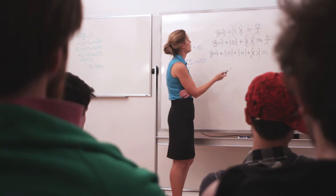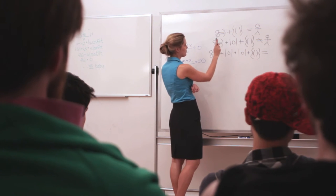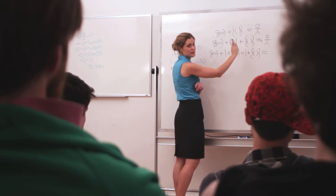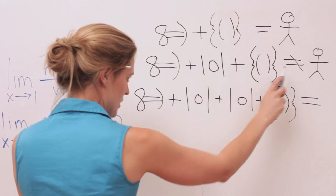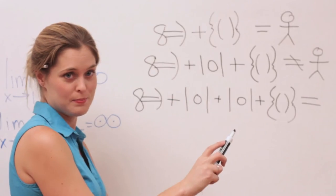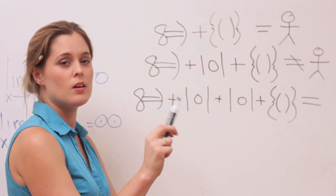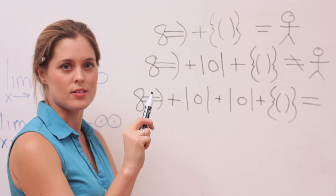Now class, we all know that guy part plus lady part equals baby. And that guy part plus condom plus lady part equals no baby. Now who can tell me what guy part plus two condoms plus lady part equals? Negative babies. No. Pairing, ripping, and accidents. Everyone write this down.